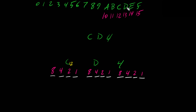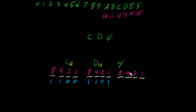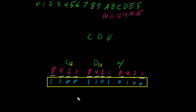D is equal to 13. To get 12 for C, we turn on 8 and 4 — so bits for 8 and 4 are on, and 2 and 1 are off. For D (13), we turn on 8, 4, and 1 — 8+4=12, plus 1=13. For the digit 4, only the 4-bit is turned on.